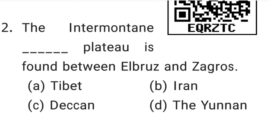The second question is: the intermountain plateau is found between Elbrus and Zagros — Tibet, Iran, Deccan, or Yunnan? The correct answer is option B, Iran.